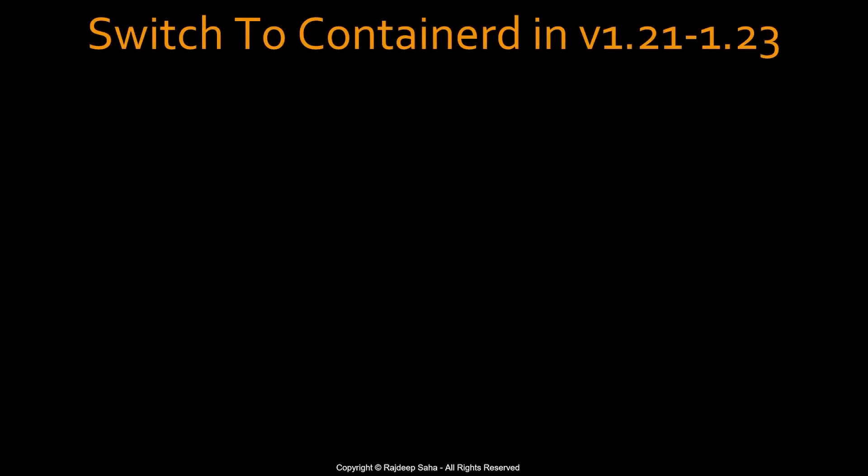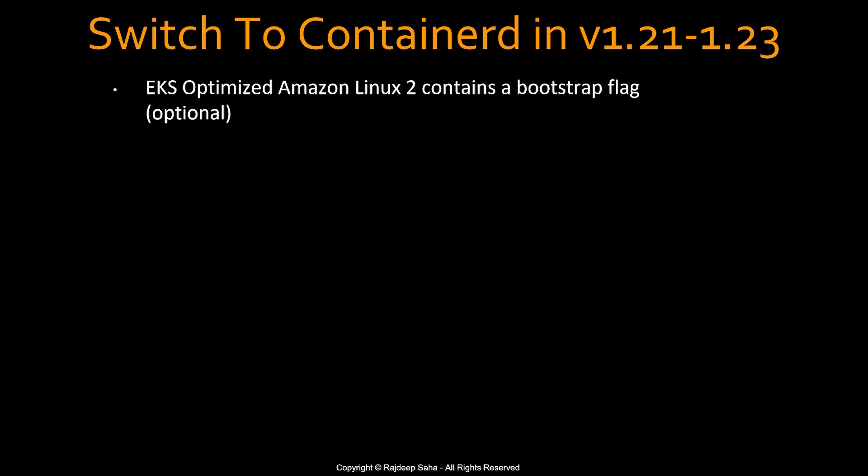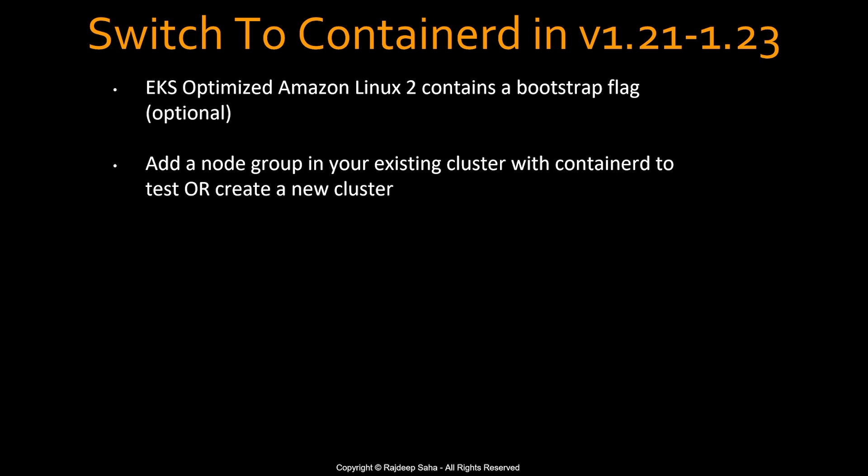So how do you switch to Containerd in Kubernetes version 1.21 to 1.23? If you are running EKS-optimized Amazon Linux 2, which is the most popular option, it contains an optional bootstrap flag. You can set this flag and the runtime will switch from Docker to Containerd. You should add a node group in your existing cluster with Containerd to test, or create a new cluster with just Containerd. You can have two different node groups — one with Docker runtime and another with Containerd — running at the same time to test out the same software in the same cluster.